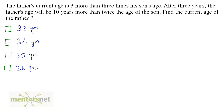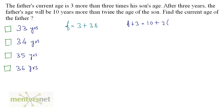Let the son's current age be S and the father's current age be F. The current age of the father is 3 more than 3 times his son's age, so F is equal to 3 plus 3S. After 3 years, F plus 3 equals 10 more than twice the son's age at that time, so F plus 3 equals 10 plus twice S plus 3.